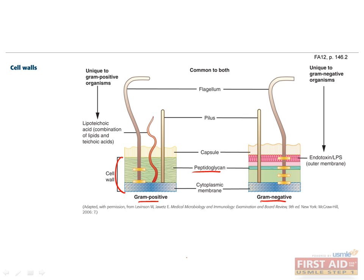Gram-negative organisms contain much thinner peptidoglycan layers, outer membranes, and periplasmic spaces. The periplasmic space contains enzymes necessary for bacterial virulence, such as proteases, phosphatases, lipases, and beta-lactamases, which are important inhibitors of penicillin drugs. Only gram-negatives contain lipopolysaccharide endotoxins within their outer membranes, which are potent activators of host immune cells and cause macrophages to release TNF-alpha, causing septic shock.